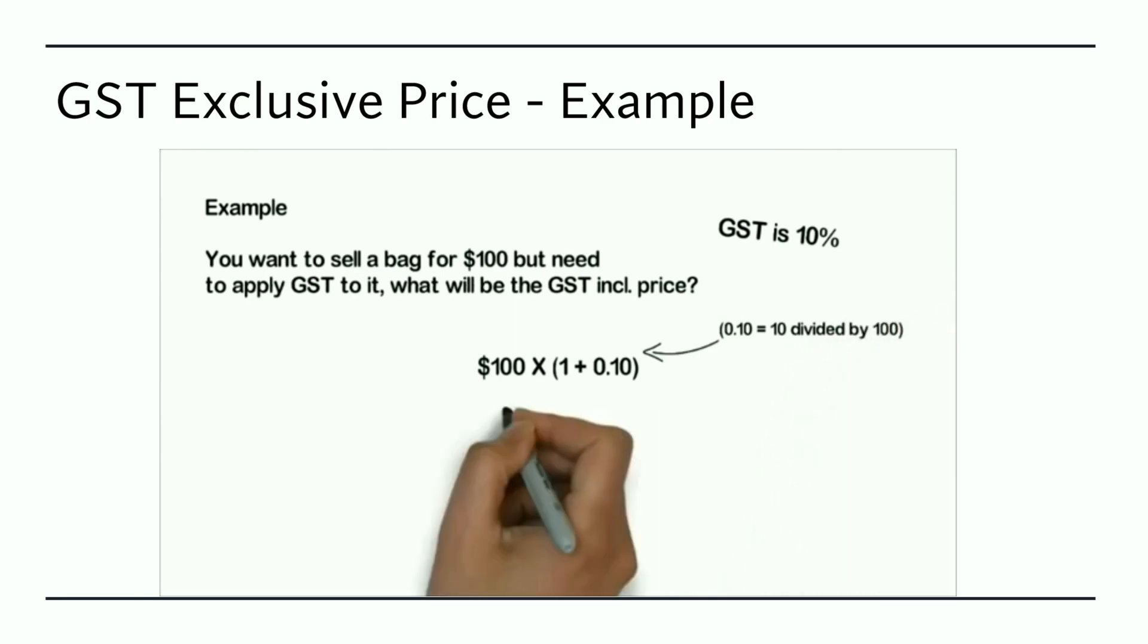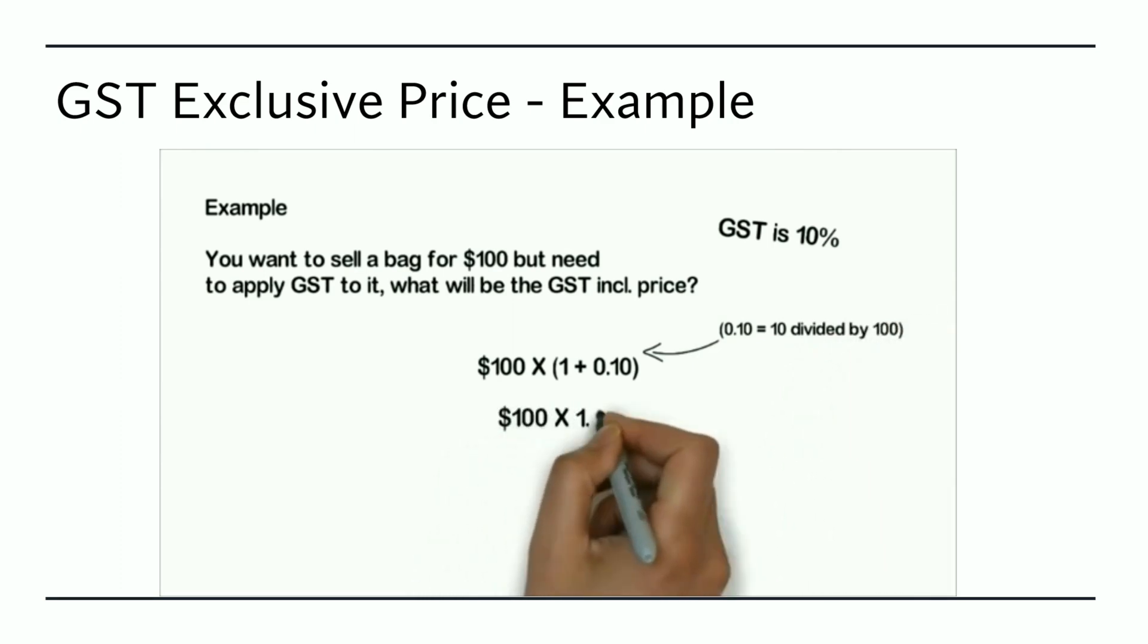Therefore, you have $100 times 1.1, which equals $110 including GST, meaning the GST amount is $10.